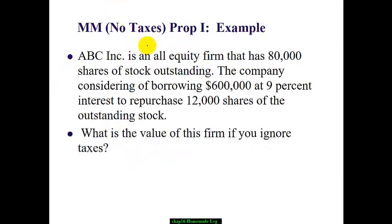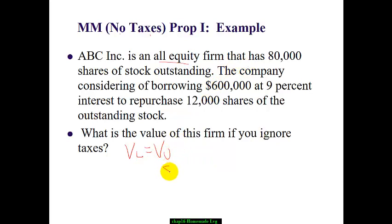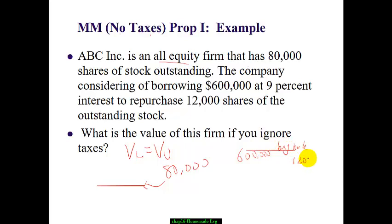Let's look at an example following MM Proposition 1 with no corporate tax. Suppose a company is all equity with 80,000 shares of stock. The company is thinking of borrowing $600,000 at 9% to buy back 12,000 shares of stock. What's the value of the firm if we ignore tax? Since capital structure doesn't matter, the total value is the same. Under the unlevered structure we have 80,000 shares, and the company used $600,000 to buy back 12,000 shares.